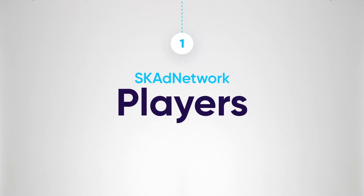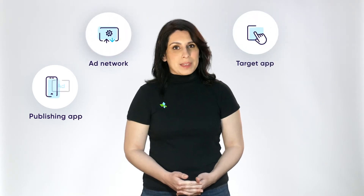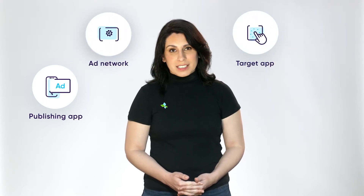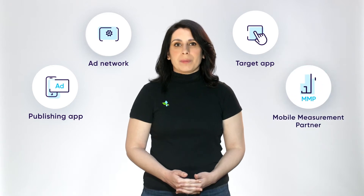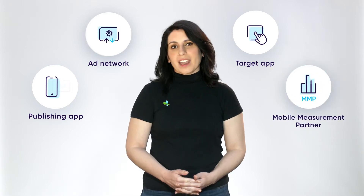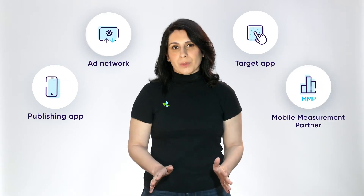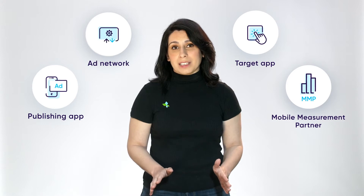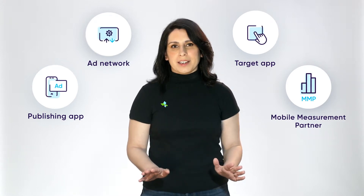Let's start small and break it down piece by piece. We'll begin with the four main players involved: the publishing app, the app that is displaying the ad; the ad network; the target app, the app that is being advertised; and the mobile measurement partner. Each of these players has specific roles and responsibilities to make sure that everything runs smoothly.